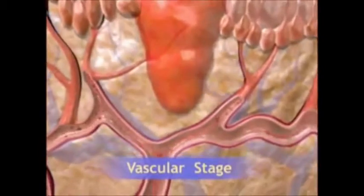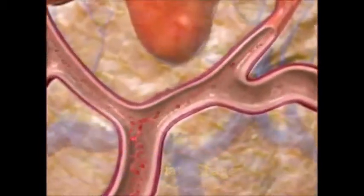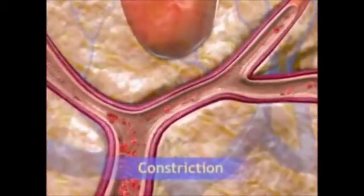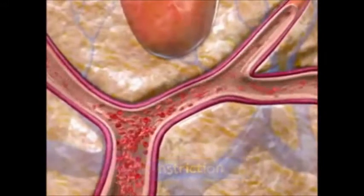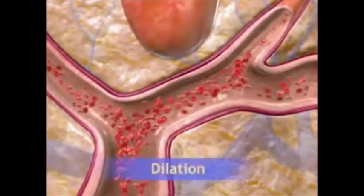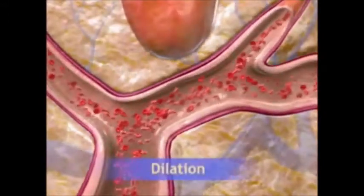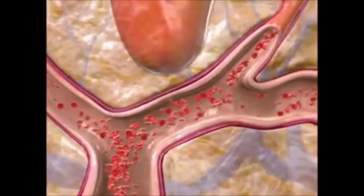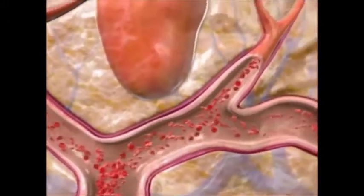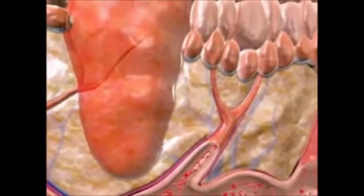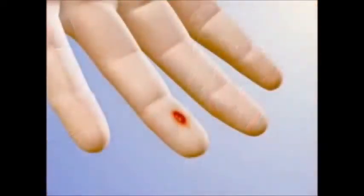In the vascular stage, arterioles and venules near the site of injury constrict briefly, then dilate. Dilation promotes congestion, while an accompanying increase in capillary permeability leads to the movement of fluid into the affected tissue, resulting in the five classic signs of inflammation.